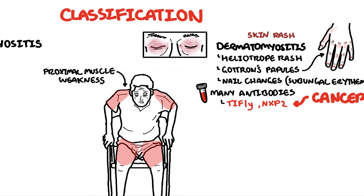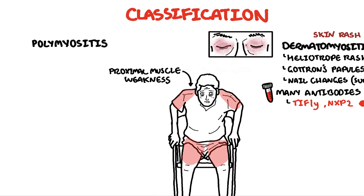Polymyositis is the other side of the spectrum, presenting with proximal symmetrical muscle weakness involving the shoulders, hips, thighs and even the neck. Importantly, there is no rash. Patients are often seronegative, meaning that they do not have any muscle-associated antibody.